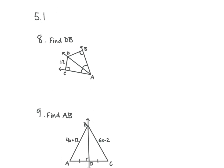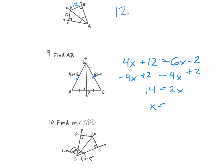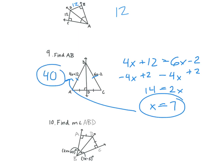Find DB. DB is equal to DC, so we just know that it's 12. Find AB. We know that the two sides are equal, so 4X plus 12 is equal to 6X minus 2. We subtract 4X from both sides and add 2, getting 14 is equal to 2X, and X is equal to 7. We plug that in: 4 times 7 is 28 plus 12 equals 40. So AB is equal to 40.